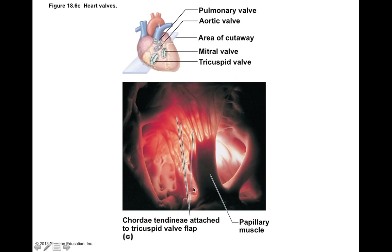Looking inside the ventricle, you can see papillary muscle with chordae tendineae. The chordae tendineae link up to the atrioventricular valve above. Looking at this particular image, we can count one, two, three cusps — so it's probably the tricuspid valve, and there are three sets of papillary muscle linking up to those valve leaflets. The tricuspid valve is also called the right atrioventricular valve.